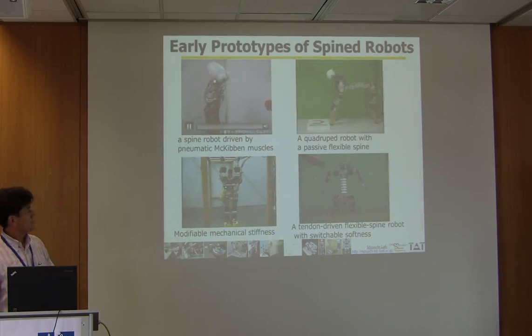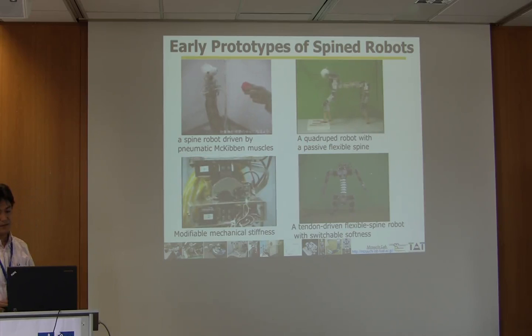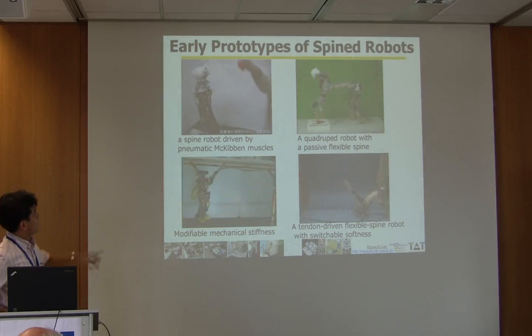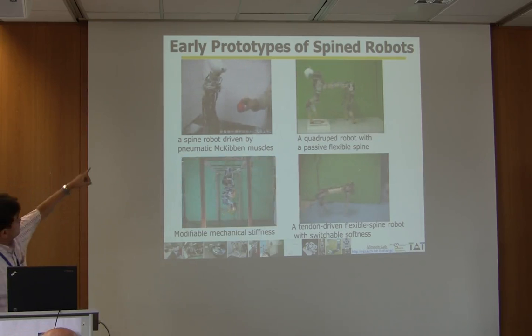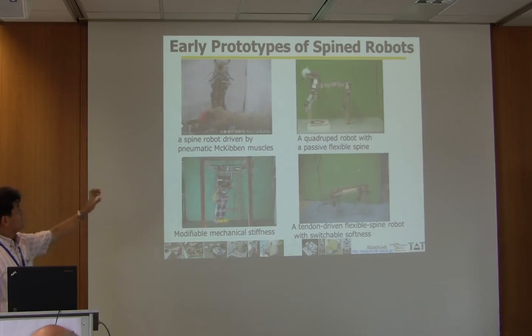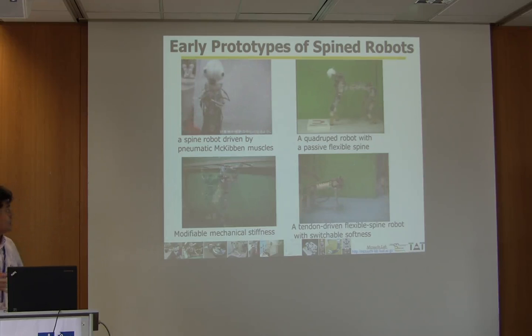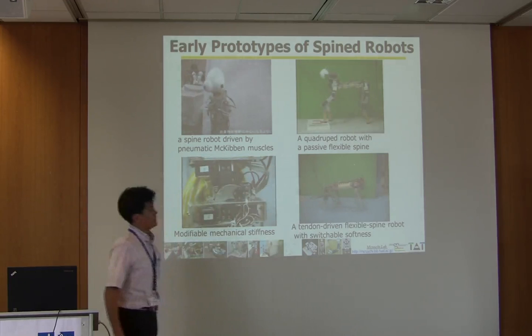Before talking about the musculoskeletal humanoid, I'd like to introduce some of my very early prototypes of muscle-driven robots. This is a spine robot built with 36 pneumatic actuators. All the air actuators are controlled by binary marks, and the robot is tracked on the red board based on camera information. It can generate feedback control using artificial muscles. This is a smartwatch-type robot whose spine is a passive flexible spine.